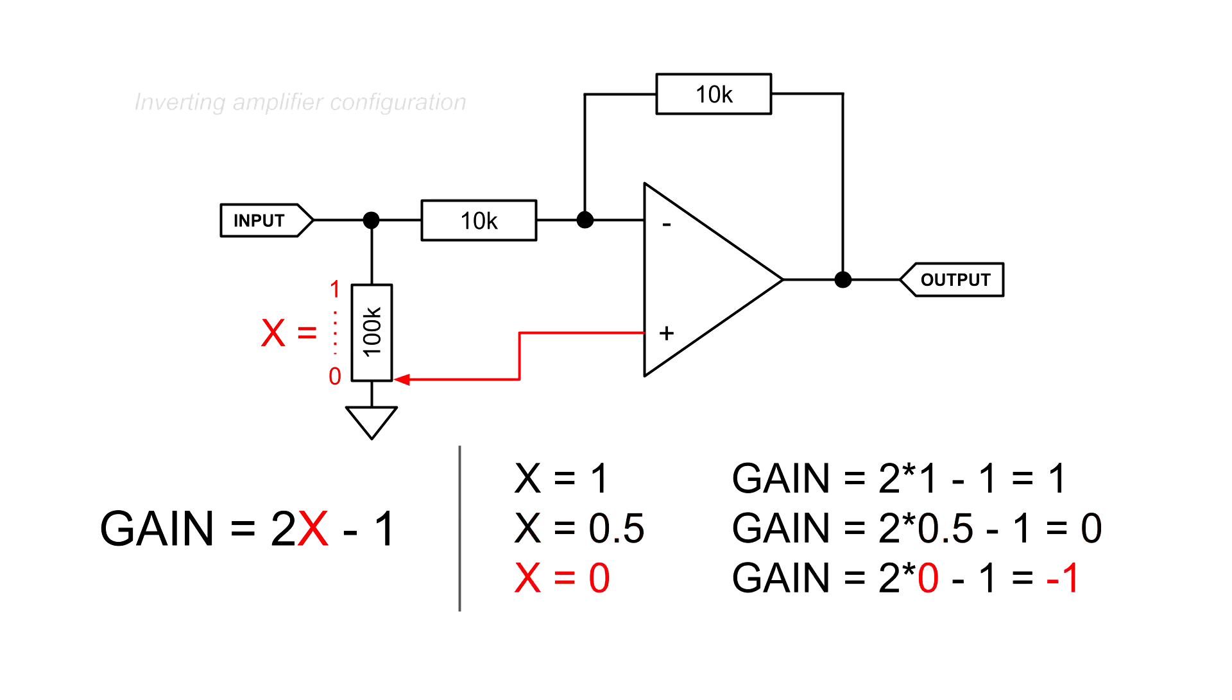If you put the wiper at the lower limit of the potentiometer, the non-inverting input is connected to ground. The circuit now functions as an inverting amplifier with a gain of minus 1.